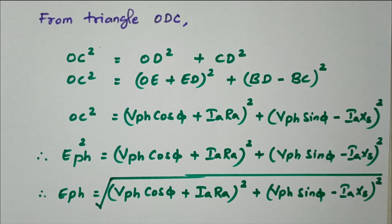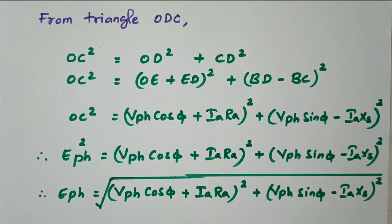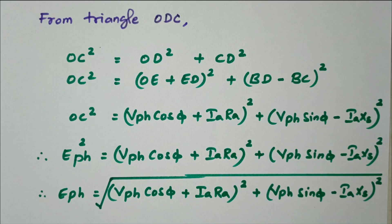In this video, we discussed the phasor diagram of a loaded alternator for the leading power factor. First, we discussed the equivalent circuit, followed by the voltage equation. The generated EMF E_phase equals the vector sum of the voltage available at the load terminal V_phase plus the impedance drop IA·ZS. For a leading power factor, a capacitive load is connected; accordingly, the phasor diagram is drawn and extended. From the triangle, we calculate the expression for E_phase. Subscribe the channel for more videos and notifications. Thank you for listening. All the best for your examination.